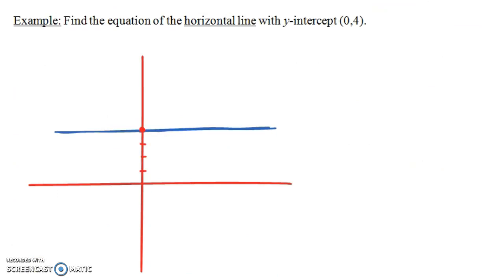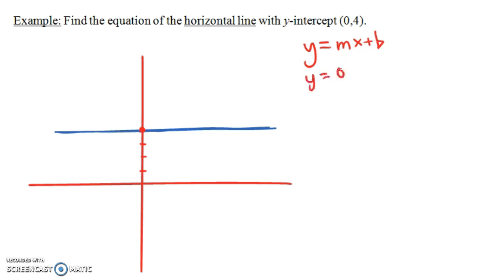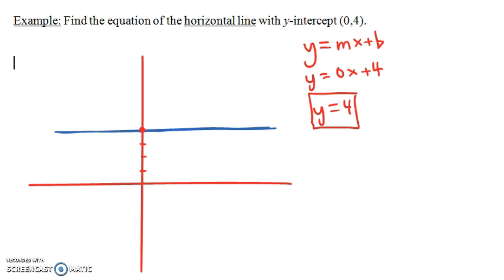This next example asks about horizontal lines. Find the equation of the horizontal line that has a y-intercept of (0, 4). I've drawn this horizontal line here — it has a y-intercept of (0, 4). Horizontal lines have a slope of 0, so in the form y equals mx plus b, m is 0 and b is 4. That gives y equals 0x plus 4, but since 0x is just 0, we write this as y equals 4. In fact, y equals any constant — y equals 4, y equals 7 — will be a horizontal line with that y-intercept.